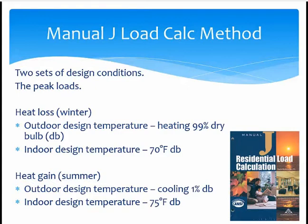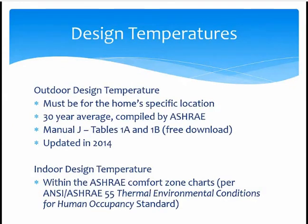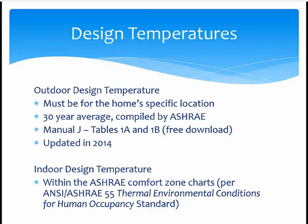So where do we get these design temperatures? The outdoor design temperature will be specific to the home's location — it's the 30-year average compiled by ASHRAE, and ACCA's Manual J has these temperatures in tables 1A and 1B. We also have these tables as a standalone document, offered for free download on our codes page. In the fall of 2014, we began updating these tables to comply with the latest ASHRAE data. The designer is required to use data for the city listed in the table closest to the home's location. The indoor design temperatures — 70°F for winter heating and 75°F for summer cooling — were chosen to comply with the comfort charts in ASHRAE Standard 55 on thermal environmental conditions for human occupancy.